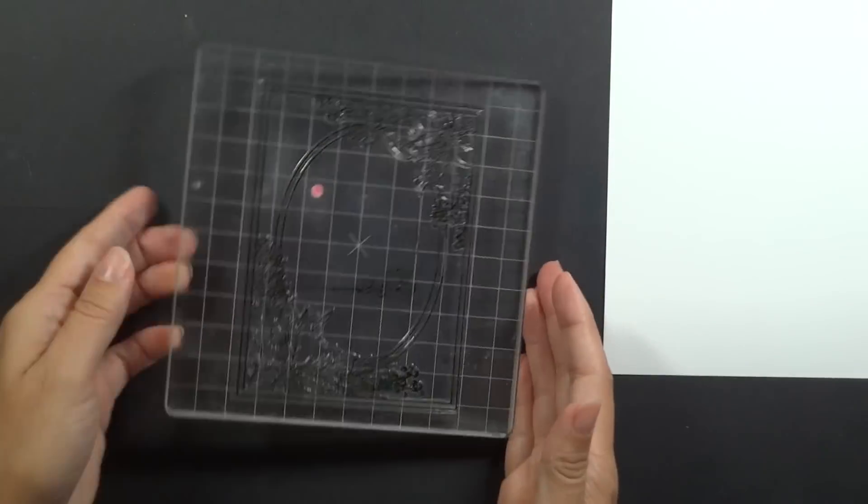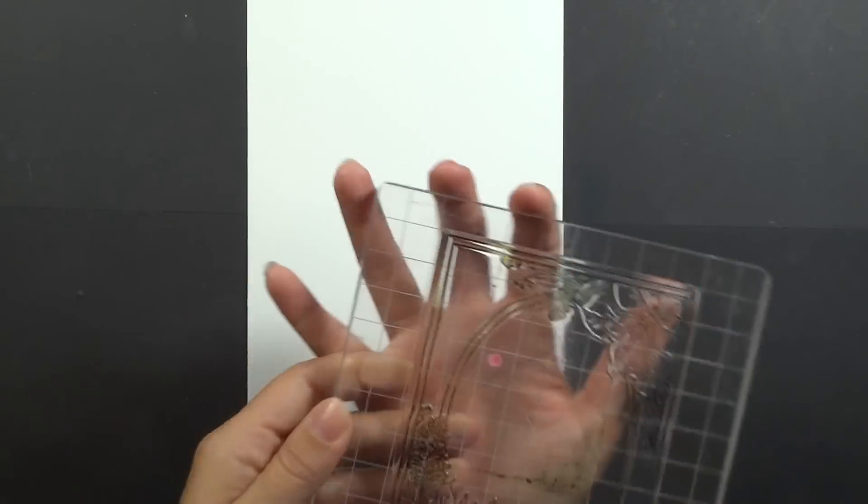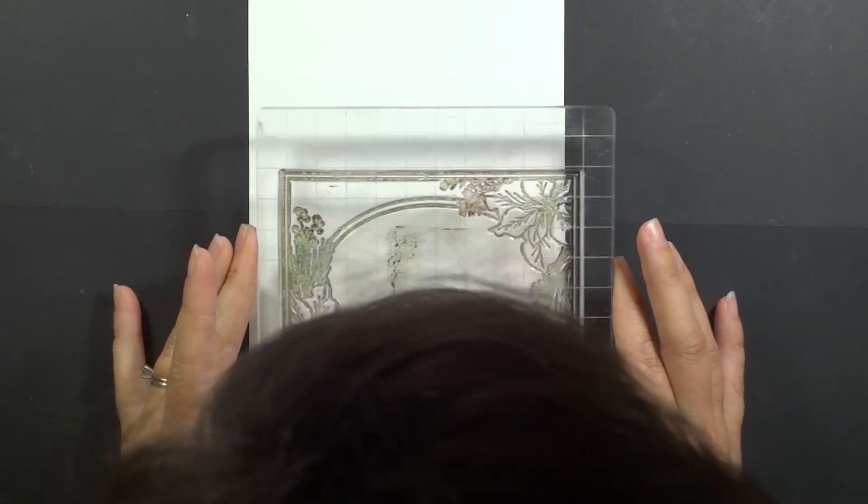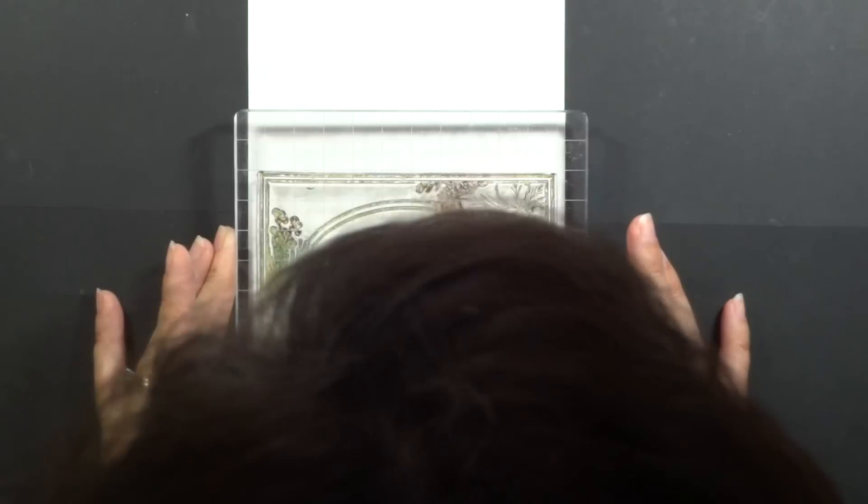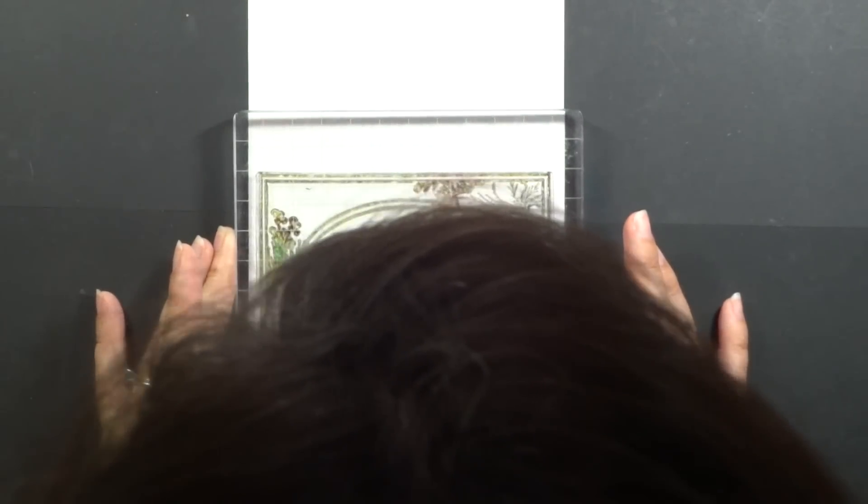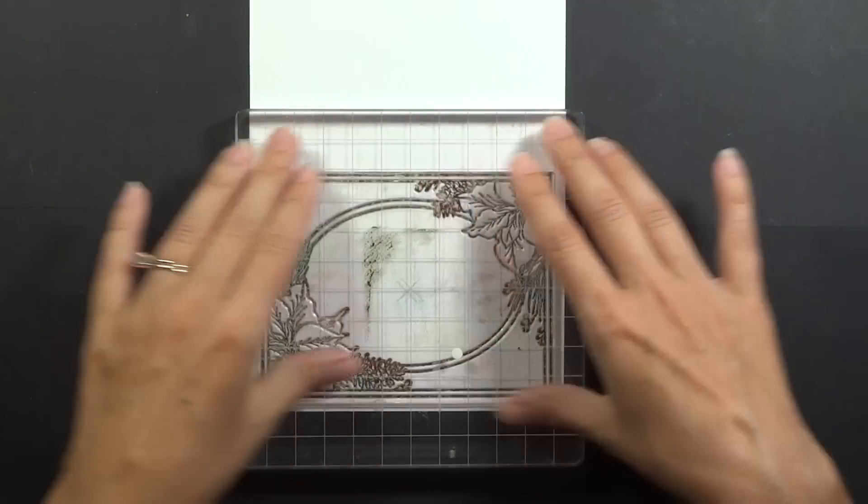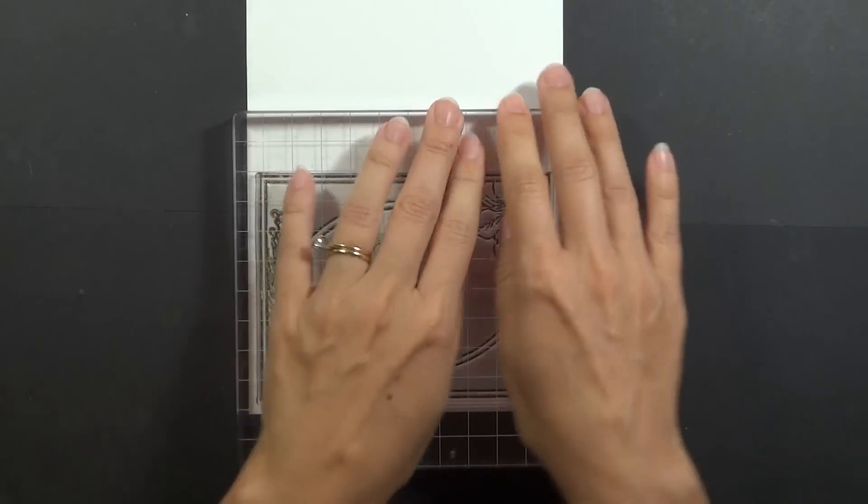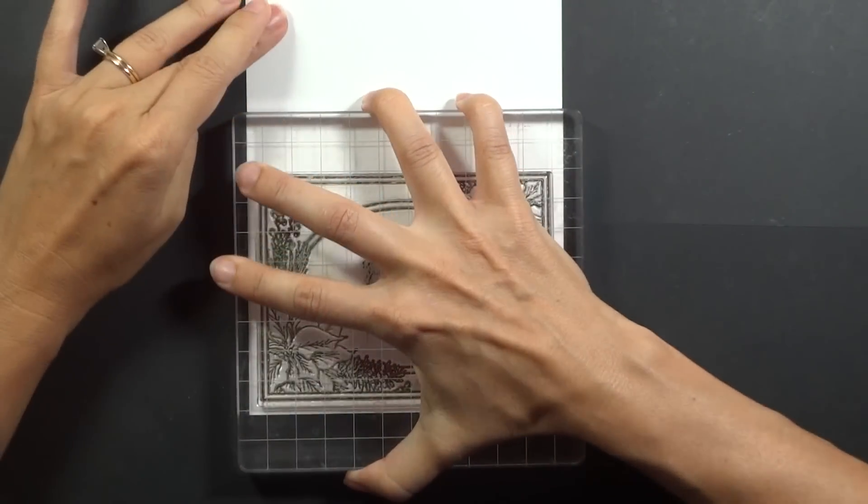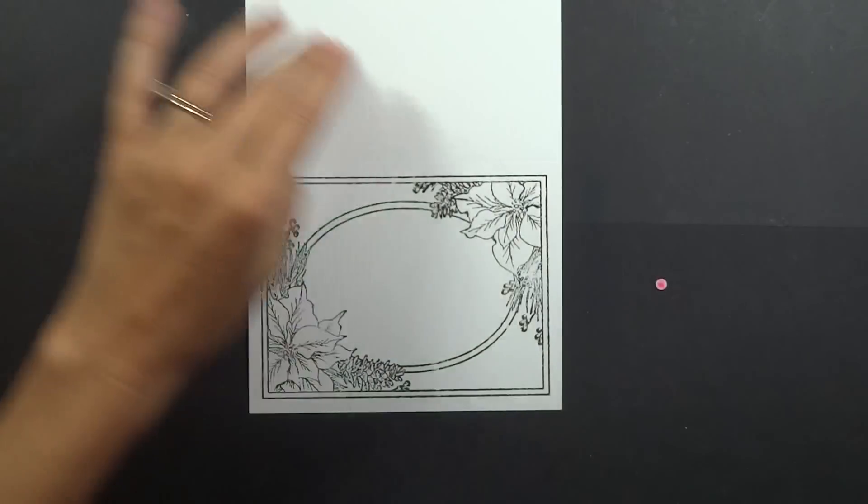Okay and then we're going to flip this over and I'm just going to eyeball this here. So I want to see that I have about the same amount of room all the way around and then just press right onto my card base. All over and pull it away and it's done.